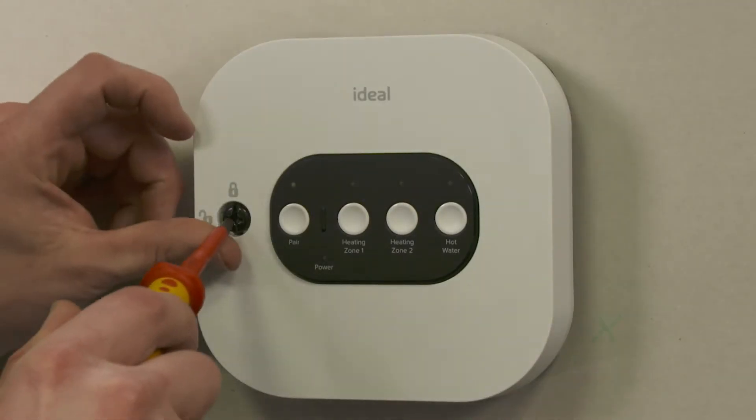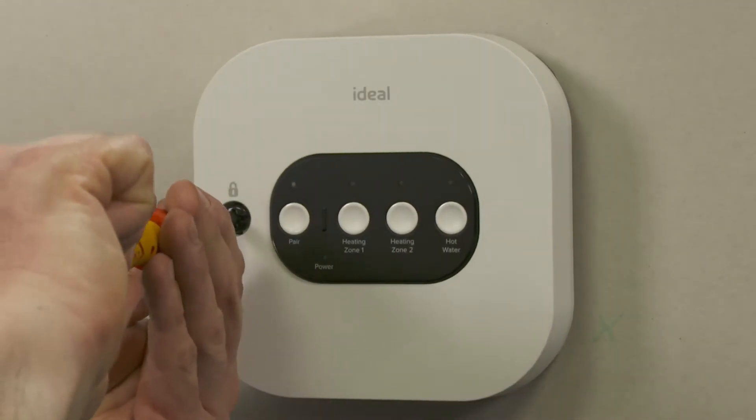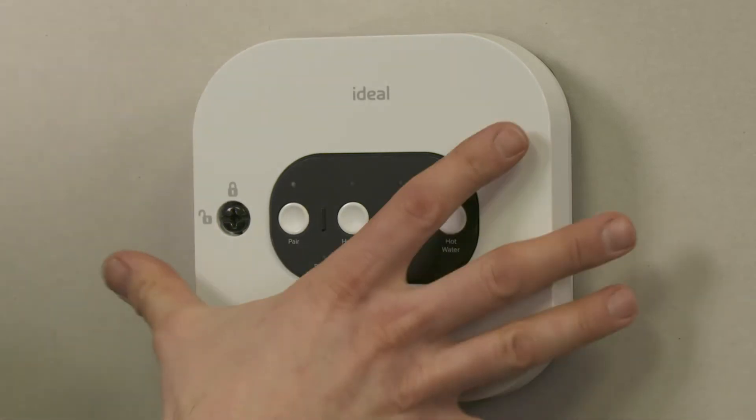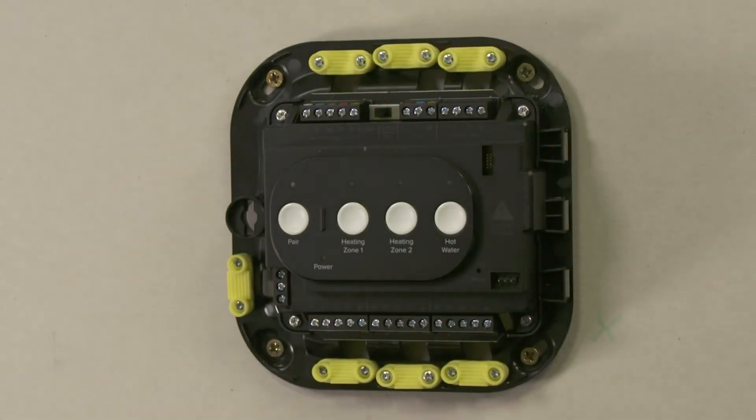To unlock the cover, turn the locking screw one quarter of a turn anti-clockwise. The smart wiring center is supplied in the unlock position. The cover opens from the left hand side.